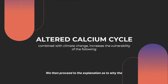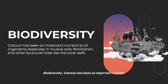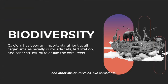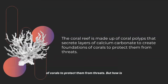We then proceed to the explanation as to why the altered calcium cycle, combined with climate change, increases the vulnerability of the following. Regarding biodiversity, calcium has been an important nutrient to all organisms, especially in muscle cells, fertilization, and other structural roles like coral reefs. The coral reef is made up of coral polyps that secrete layers of calcium carbonate to create foundations of corals to protect them from threats.